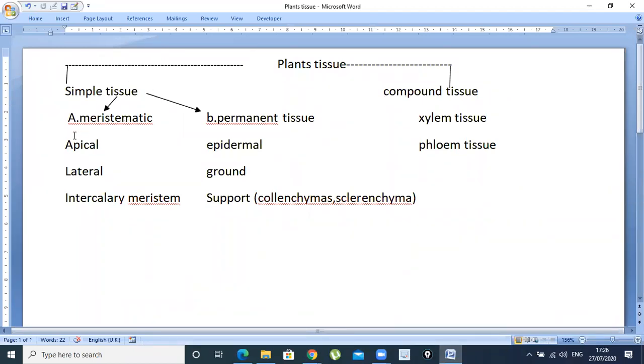We covered Meristematic Tissues. There are three types: Apical Meristem, Lateral Meristem, and Intercalary Meristem. We have studied Permanent Tissues and Epidermal Tissues. Today we study Ground Tissues.